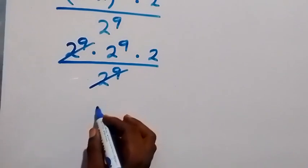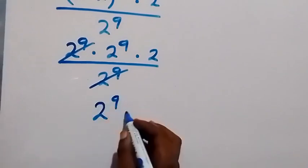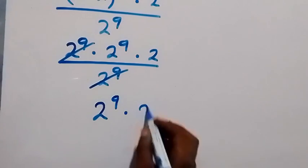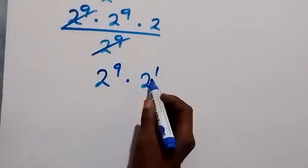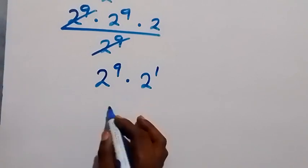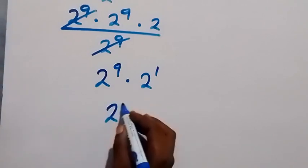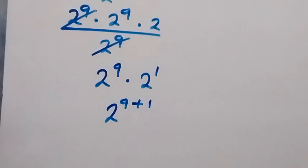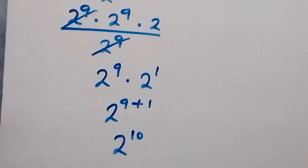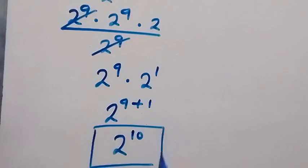That can be written as 2 raised to power 9 times 2 raised to power 1. From the law of indices, since we have the same base, we can write this as 2 raised to power 9 plus 1, which gives us 2 raised to power 10. So therefore the simplified form of this problem is 2 raised to power 10.